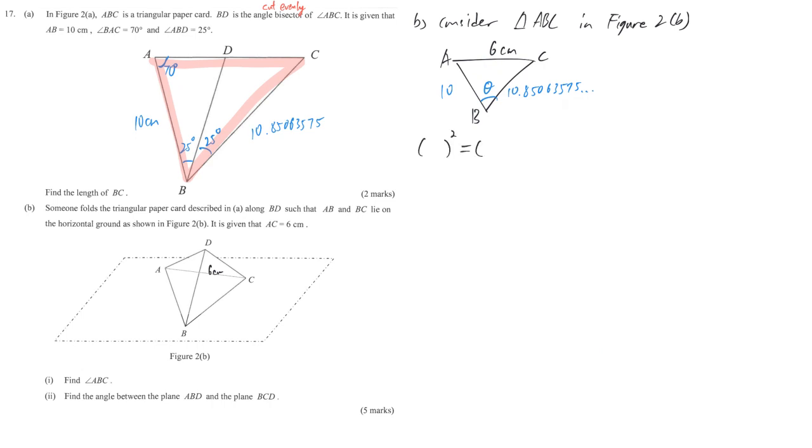Make sure you write down the bracket first. Something square is equal something square plus something square minus 2 something something cos something. So this time our angle that we want, it should be called not theta but angle ABC. The corresponding opposite side is 6. So we write down 6 square here and also 10 and BC. I write BC because I don't want to write this long decimal only.